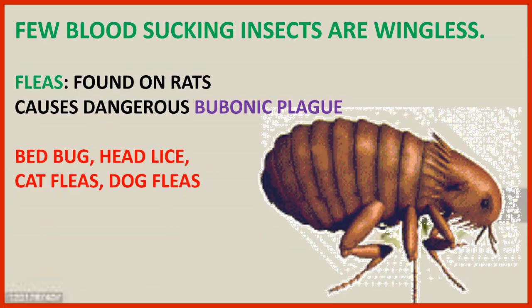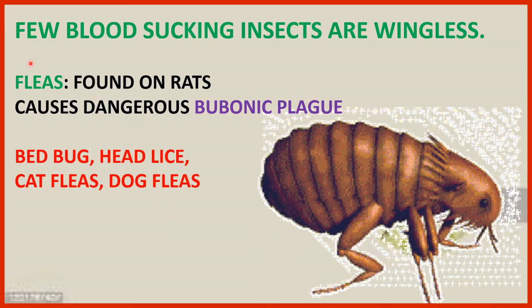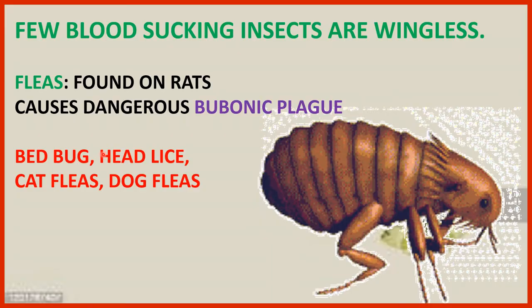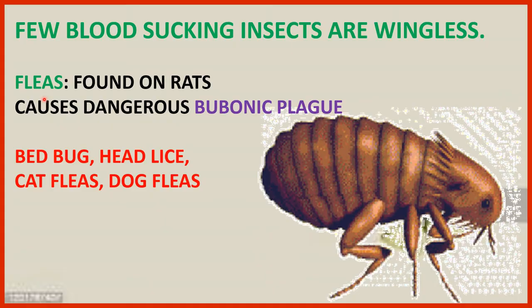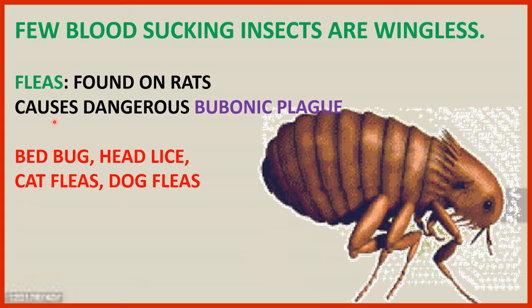Here are a few other blood-sucking insects. These blood-sucking insects are wingless. One example is fleas. These are very small insects found in the hair of animals. You can find fleas even in our heads if we don't keep them clean. Fleas are mostly found on rats, and they cause a dangerous disease called bubonic plague.